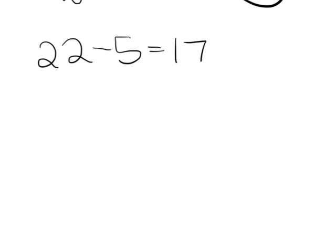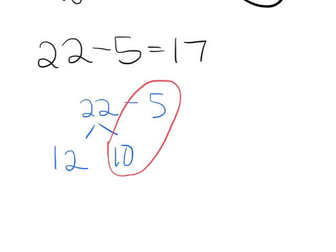We've got 22 minus 5. We're going to decompose that to 12 and 10. 10 minus 5 is 5, plus the original 12 gives us 17.